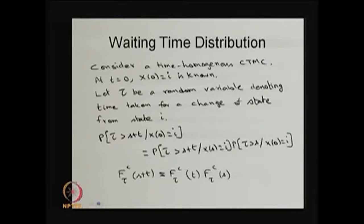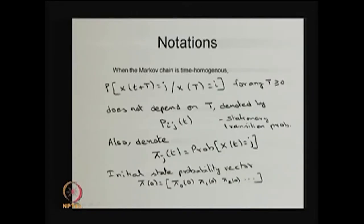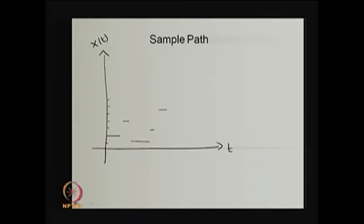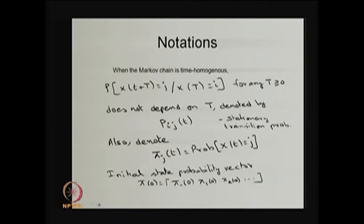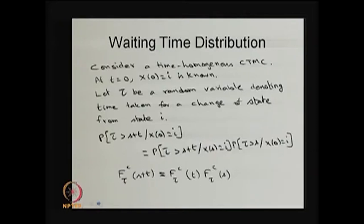Before going further, you see the sample path of a time-homogenous continuous time Markov chain. As I said, the system stays for some positive amount of time in any state before moving into any other state. Our interest is to find out what is the waiting time distribution — the distribution of time the system spends in any state before moving into any other state.